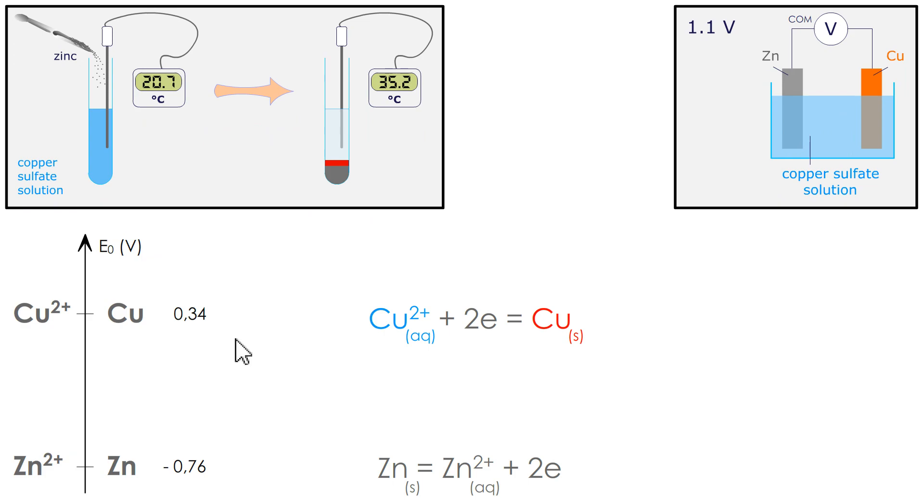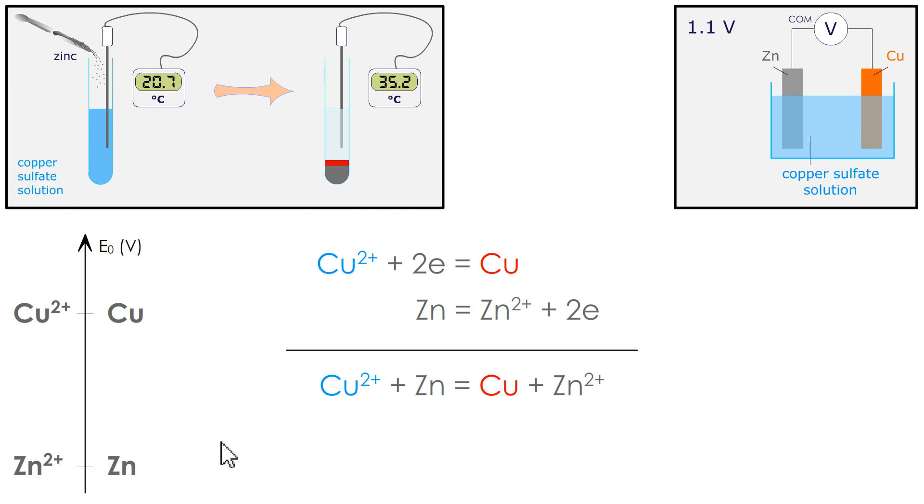This is a redox reaction. 1.1 volts is the standard potential. There are as many electrons captured as electrons supplied. So this is an electrochemical cell.